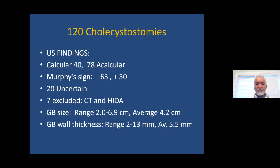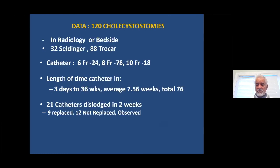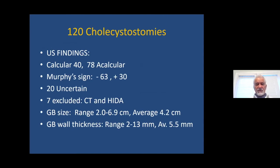It is important not to unduly risk complications of bleeding when trying to treat one problem and thereby create another. In our 120 patients, 78 had calcular cholecystitis and 40 had acalcular cholecystitis. The majority did not have Murphy's sign positive, and in 20 it was uncertain. Seven were excluded because CT demonstrated the finding.